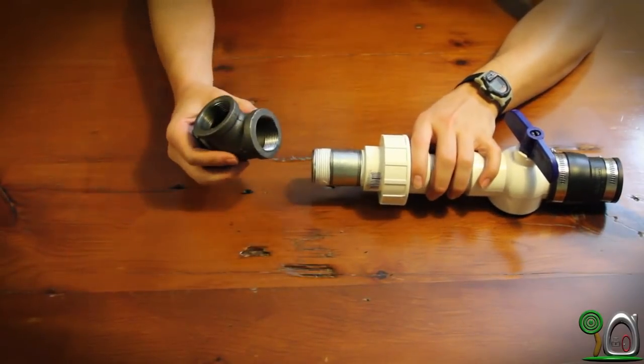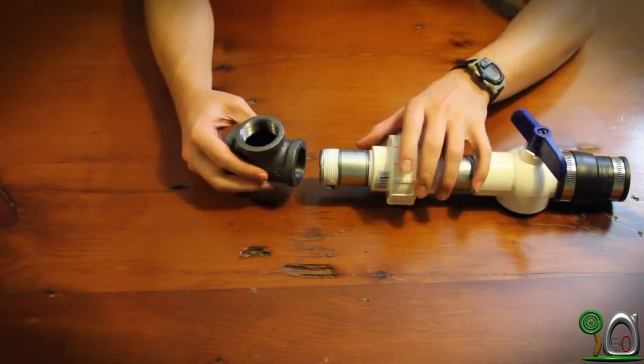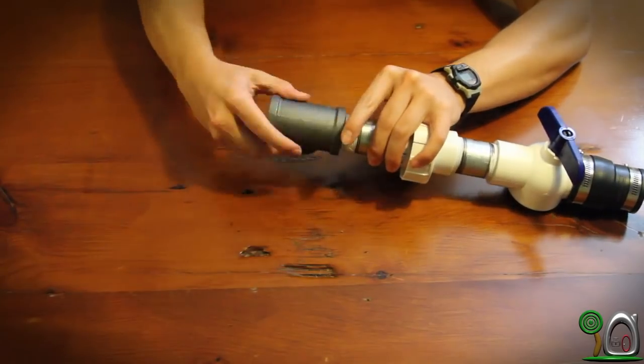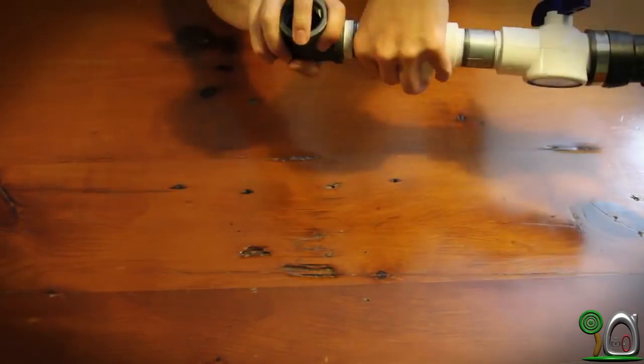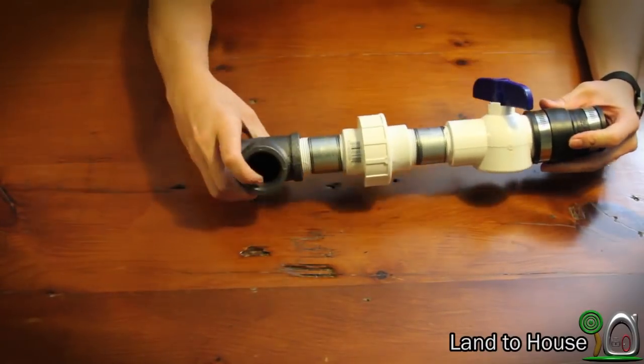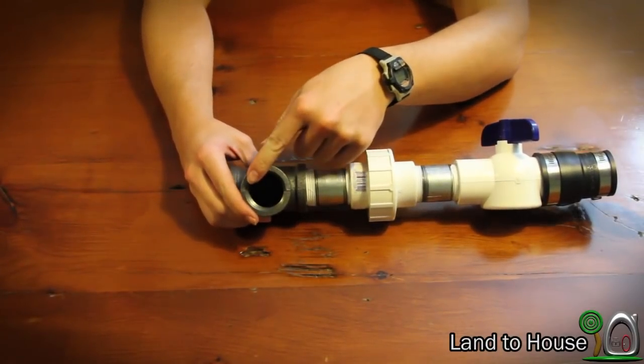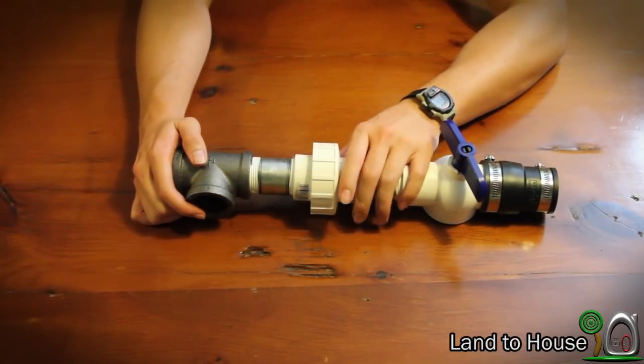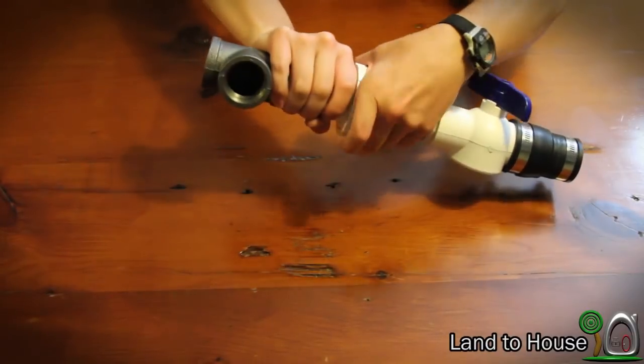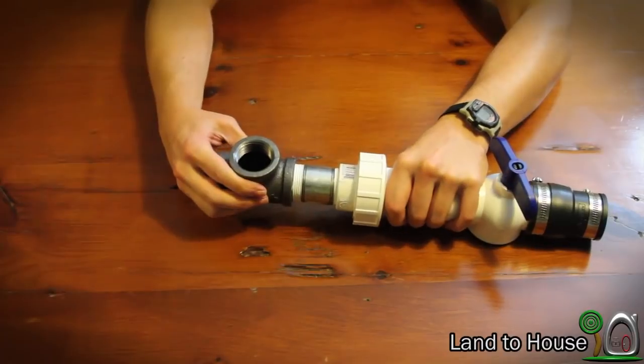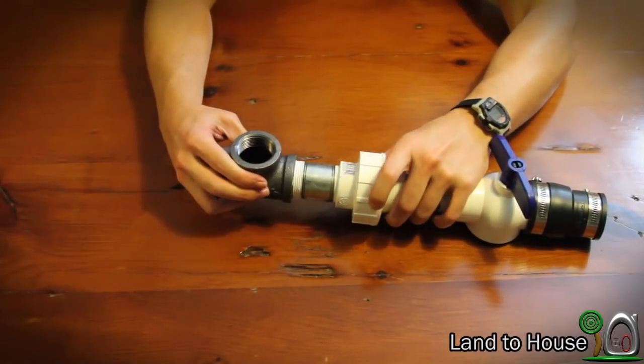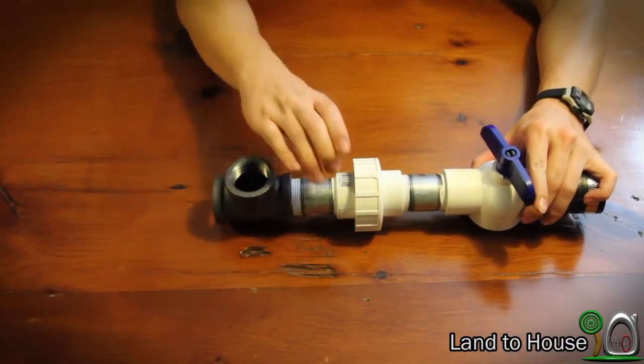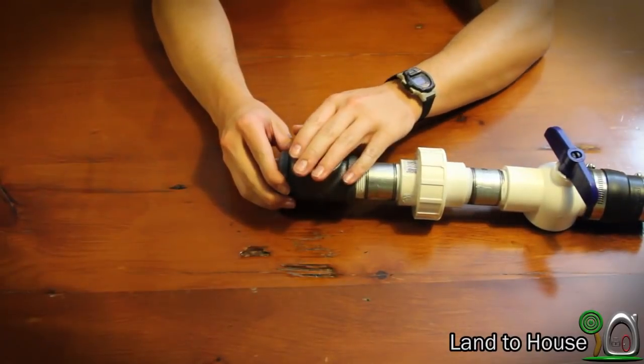Step 6. Take a 1.25 threaded T and screw that onto the pipe nipple. Now you'll notice that this T, when tightened, may not be aligned with the ball valve here. That's where this union comes in handy. You can loosen the union, turn your T to the desired angle, and then tighten your union back down. This allows your T to be facing upwards.